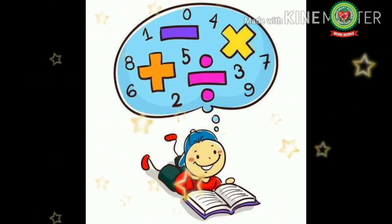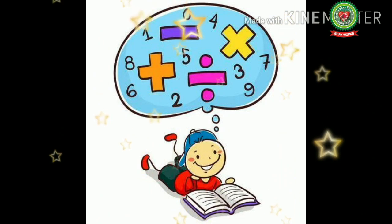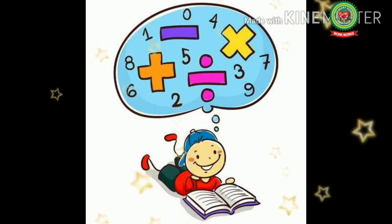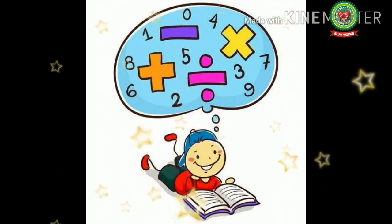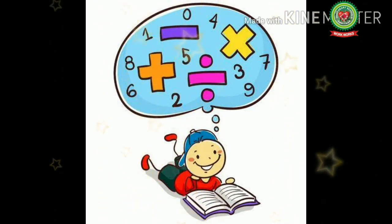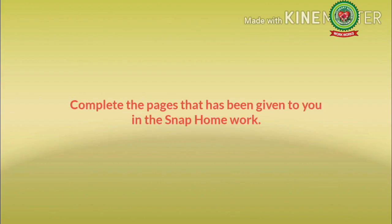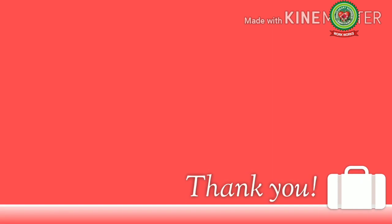I hope kids you have understood how to read the place value and also the face value till 5-digit numbers. Now complete the pages that have been given to you in the snap homebook. Thank you.